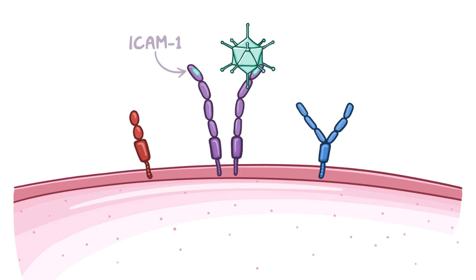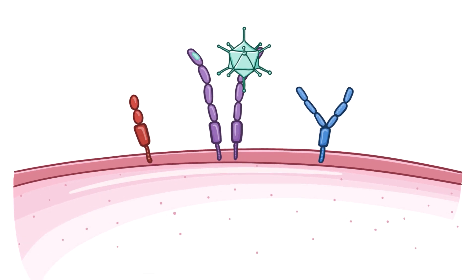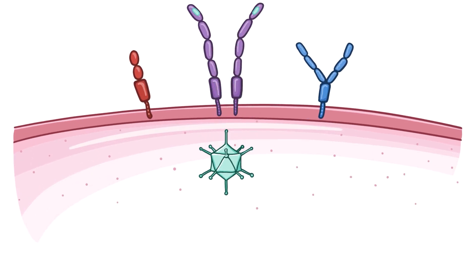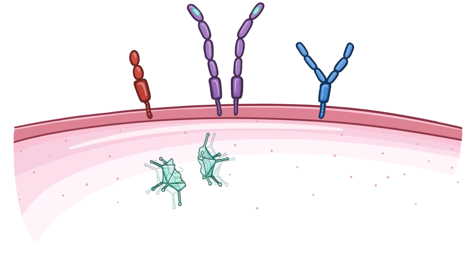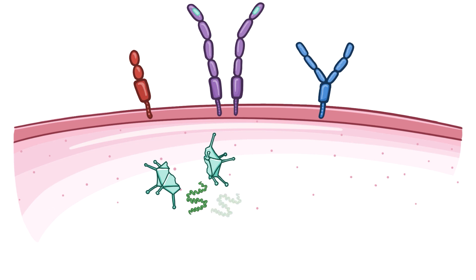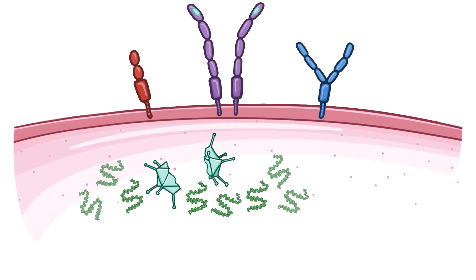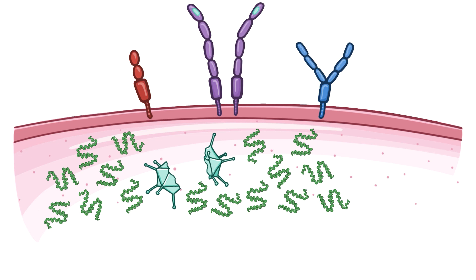This attachment allows for rhinovirus to be eaten, or endocytosed, into the host cell. During the endocytosis process, the icosahedral capsid breaks open, allowing the single-stranded RNA of rhinovirus to gain access to the host cell cytoplasm. In the cytoplasm, the host cell ribosomes take over viral protein production, helping the virus replicate.